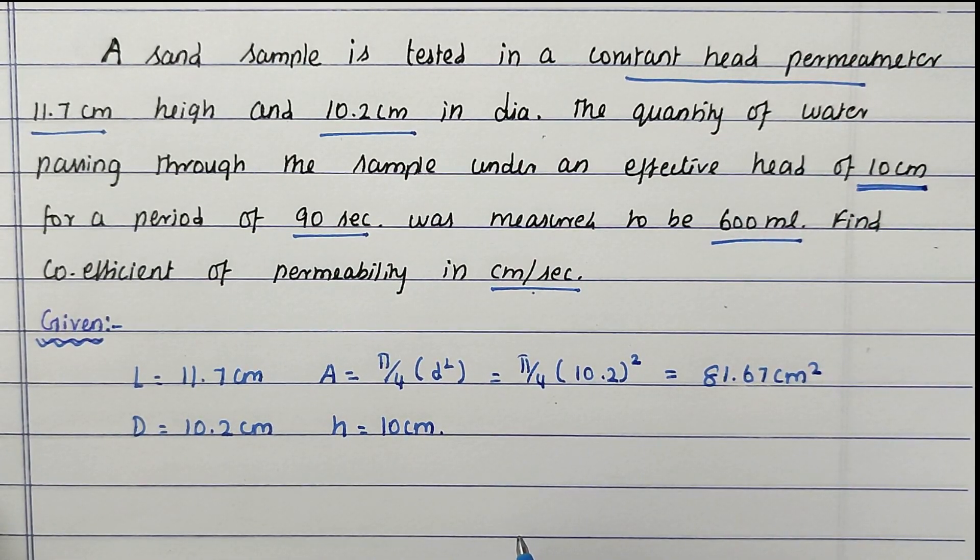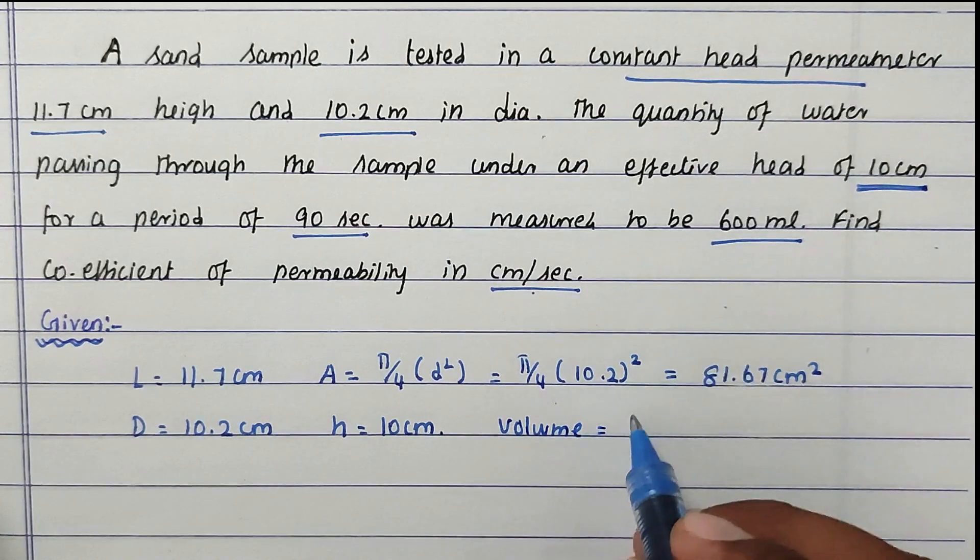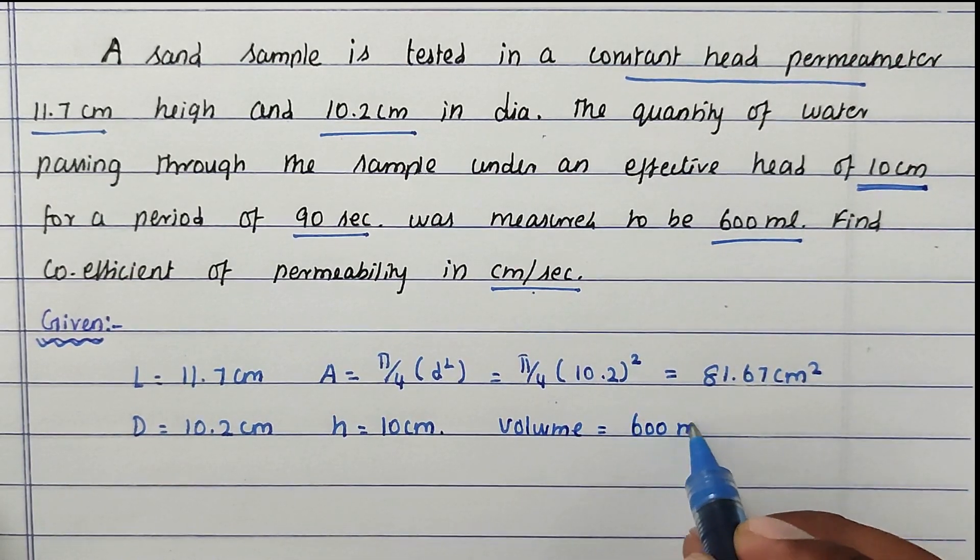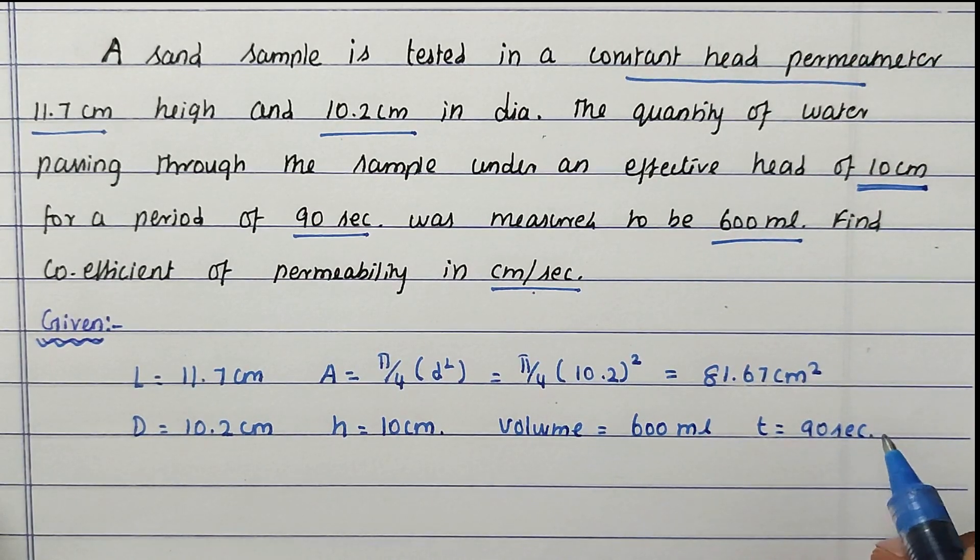Next, we have to find out the volume. The volume is given as 600 ml. Then time t = 90 seconds. These are all the given values.